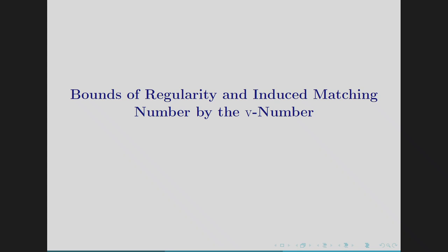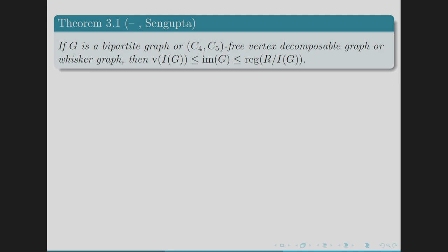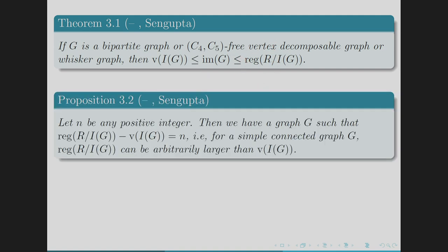Next we discuss bounds of regularity and induced matching number by the V number. The main result is: if G is a bipartite graph, or a C4-C5 free vertex decomposable graph (which includes the caudal/whisker graph), then V(I(G)) ≤ IM(G) ≤ reg(R/I(G)). Furthermore, for any positive integer N, we can construct a graph G such that reg(R/I(G)) minus V(I(G)) equals N, meaning regularity can be arbitrarily larger than the V number.